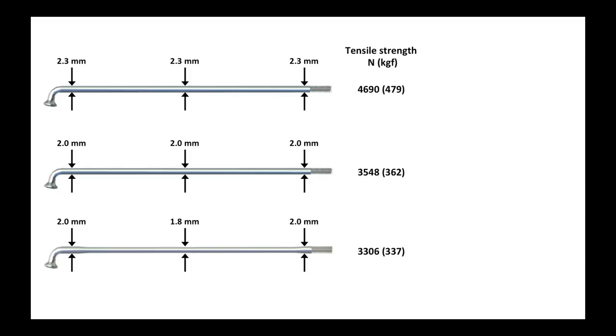Here again is the tensile strength in newtons and kilograms of force. If I have a target tension of 120 kilograms of force, you can see that my target tension is a long way from the tensile strength of the spoke. So at no point when building a wheel or riding on it do I fear breaking the tensile strength of the spoke.